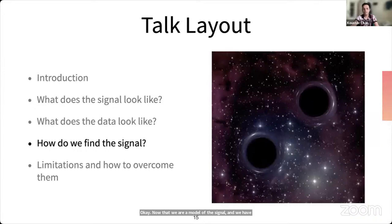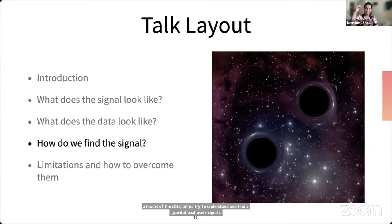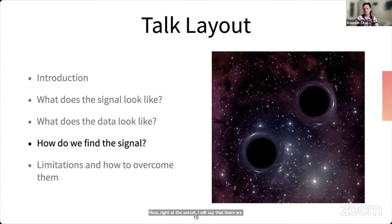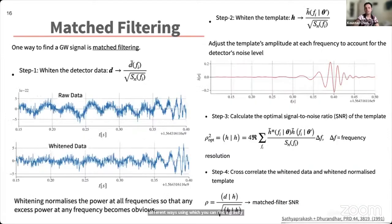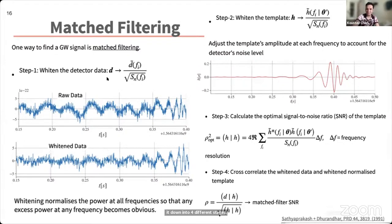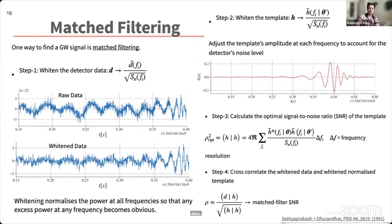Now that we have a model for the signal and the data, let's look at how to find gravitational wave signals. There are different methods; I will focus on a technique called matched filtering, broken down into four stages. The first step is whitening the detector data: we take the detector data, Fourier transform it, and normalize it by the amplitude of the noise power spectrum.